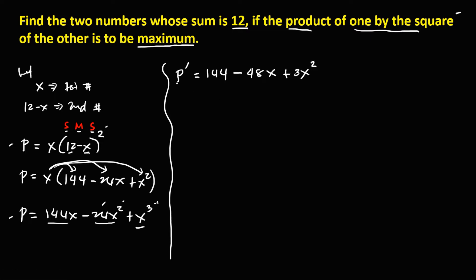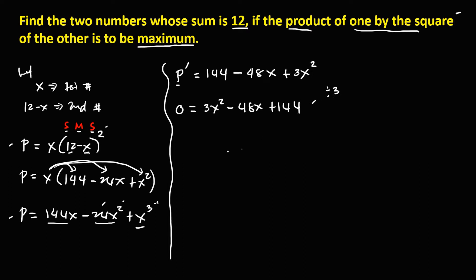We equate this to zero and arrange starting with the highest exponent: 0 equals 3x squared minus 48x plus 144. Since this is divisible by 3, we divide through by 3 to get x squared minus 16x plus 48 equals 0.